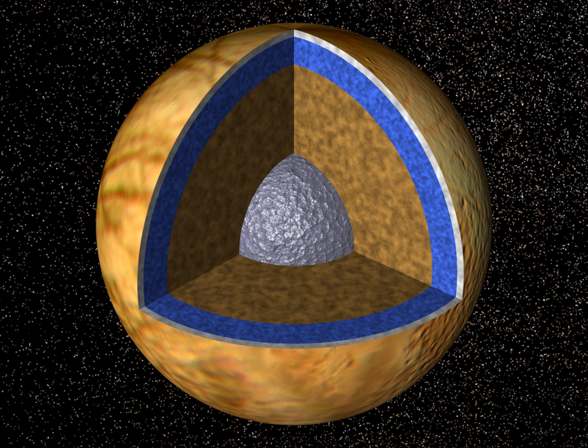Simulations of solar system formation and of extra-solar system formation have shown that planets are likely to migrate inward as they form. Outward migration may also occur under particular conditions. Inward migration presents the possibility that icy planets could move to orbits where their ice melts into liquid form, turning them into ocean planets. This possibility was first discussed in the astronomical literature by Mark Kuchner and Alain Leger in 2004.